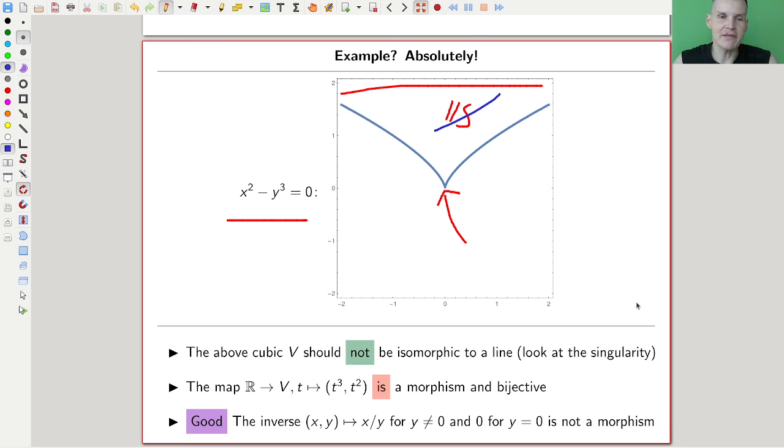And you can easily write down the map from the line, what is a line? Let's say R, R is a line, to V, just this one, t cubed, t squared. And this is a morphism, and you can check that it's bijective. Fine. Essentially, by definition, this is bijective. And just look at the way the curve is defined. But the good thing is the inverse is actually not a morphism. So I just wrote down what the inverse is, and it blows up at the origin.